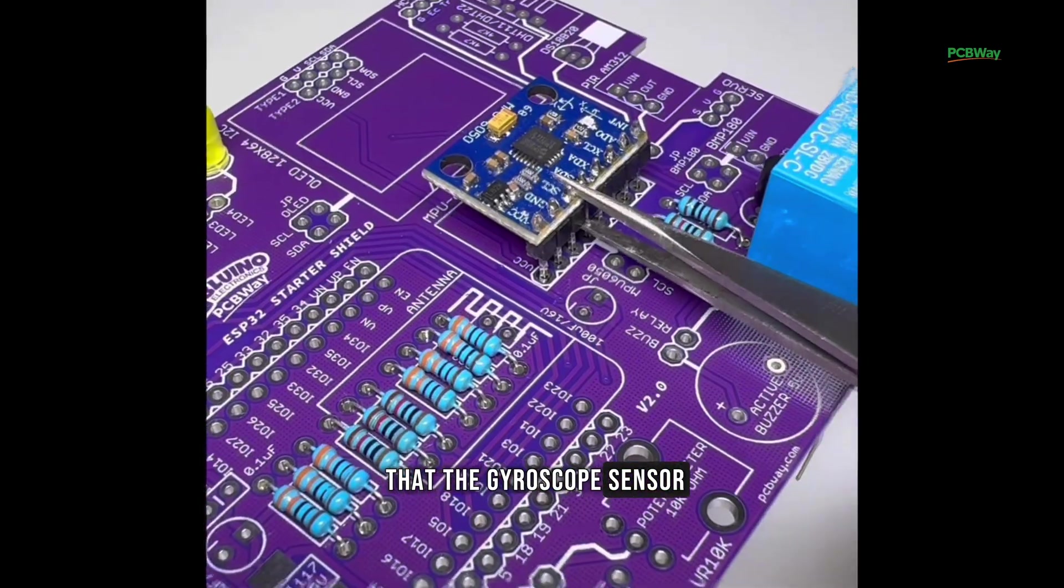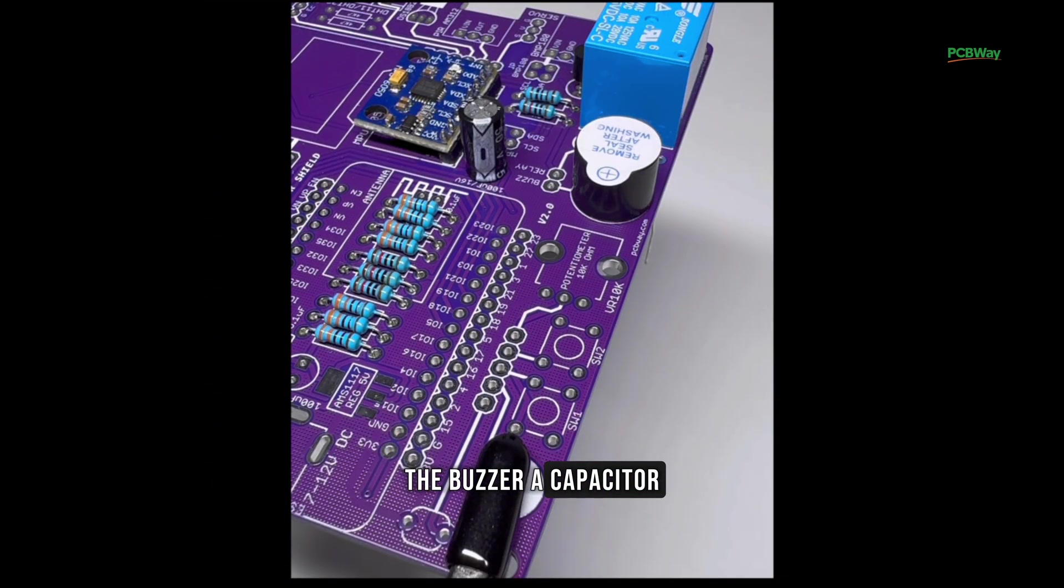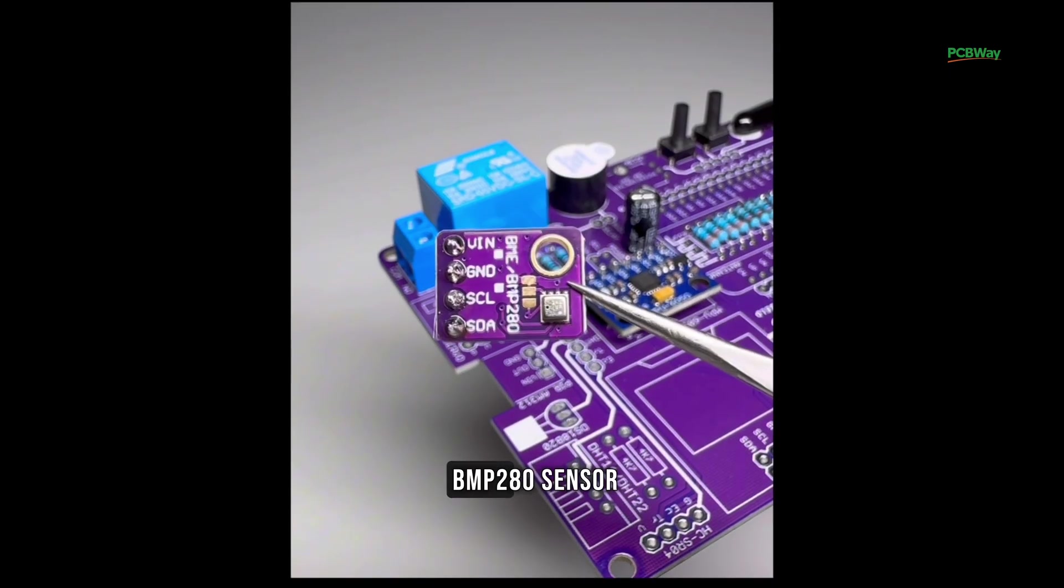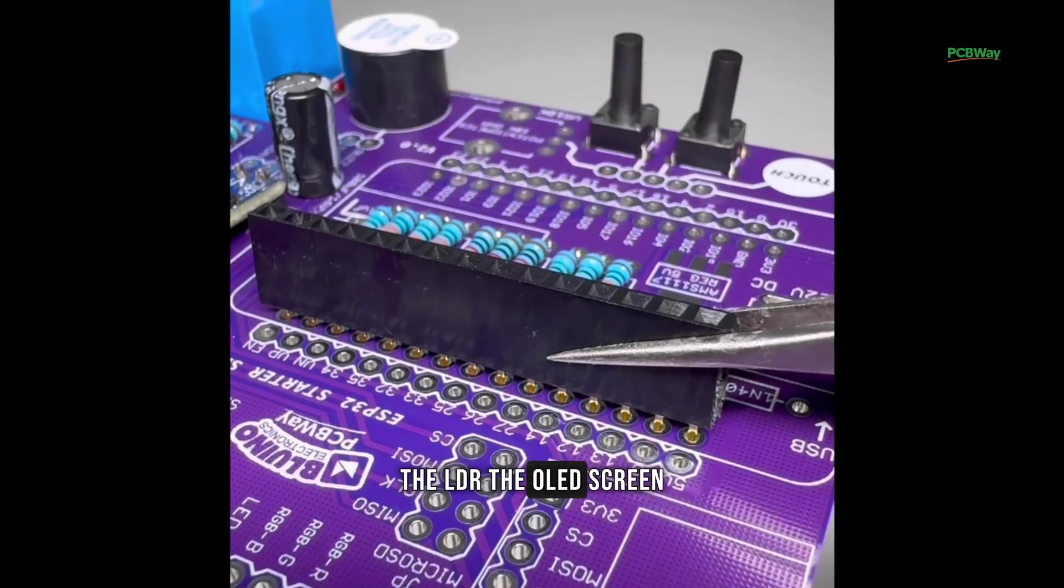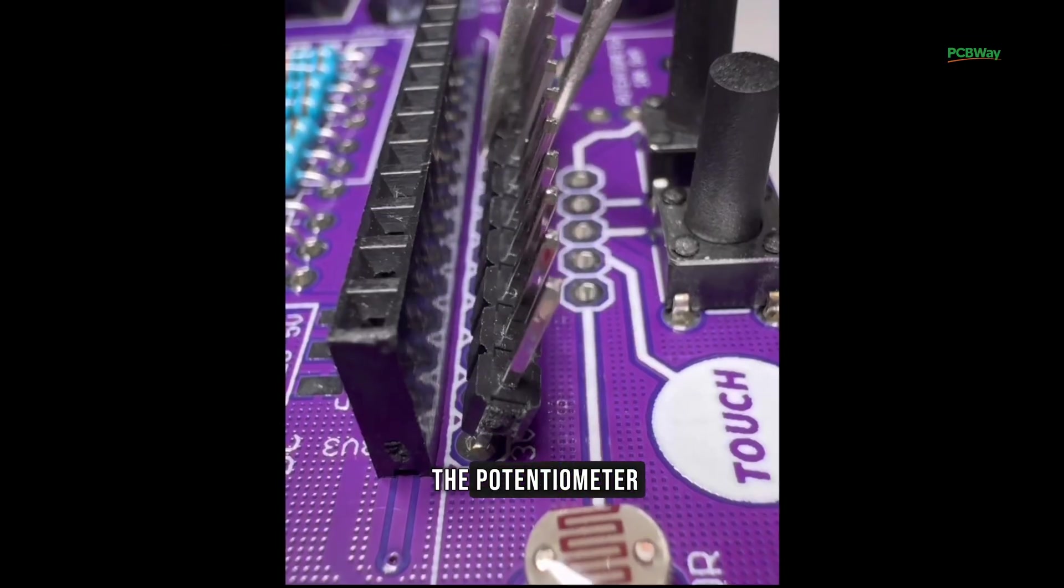After that, the gyroscope sensor, the buzzer, a capacitor, and the buttons. Next, you place the BMP280 sensor, the DHT sensor, the PIR sensor, the LDR, the OLED screen, the header pins, and the potentiometer.